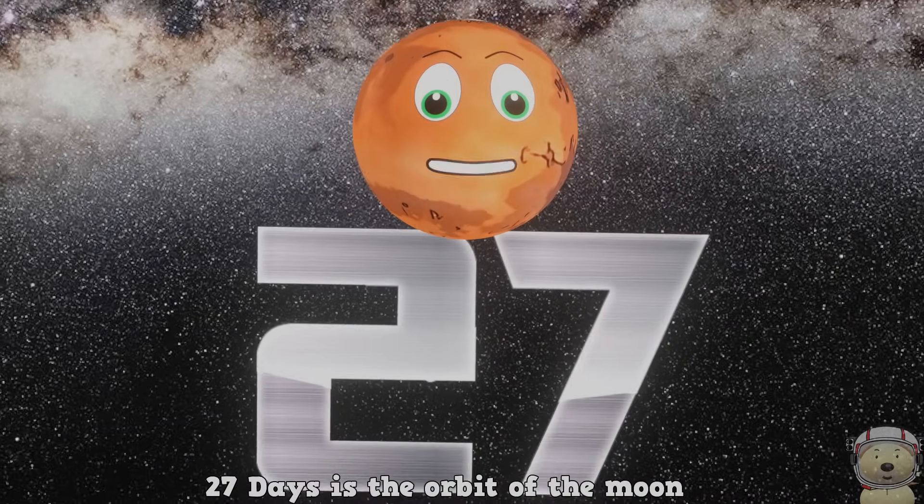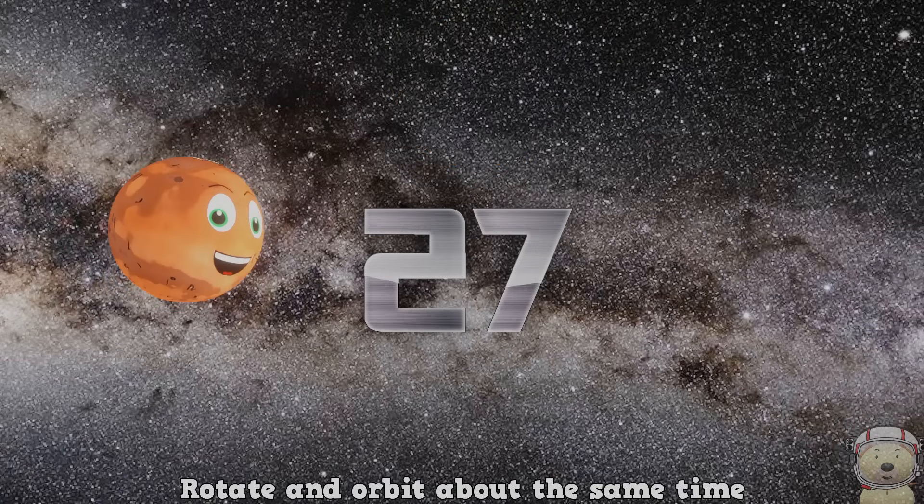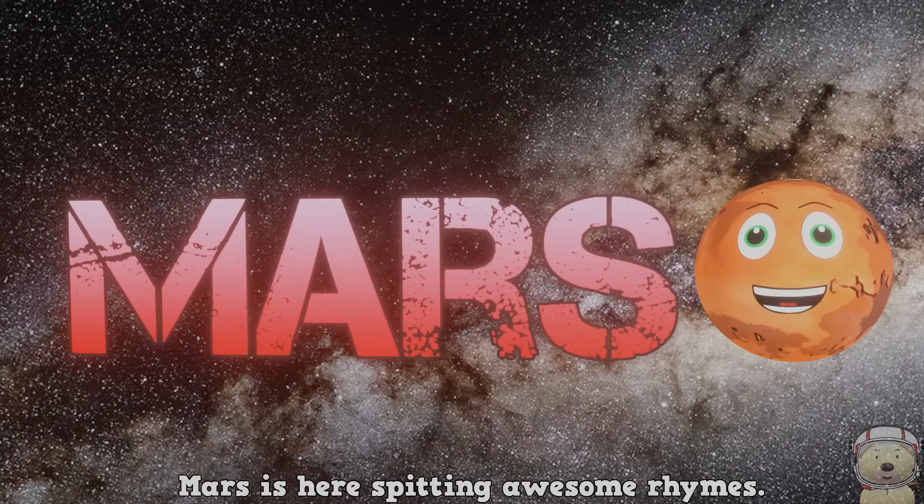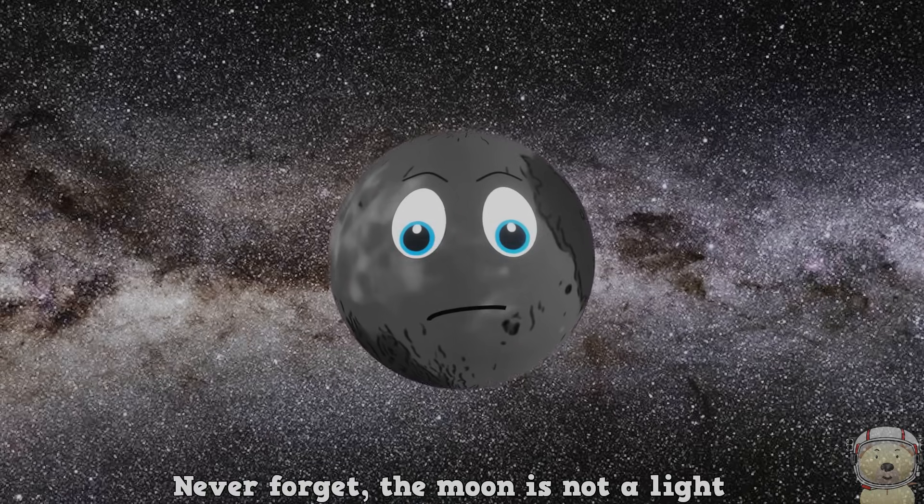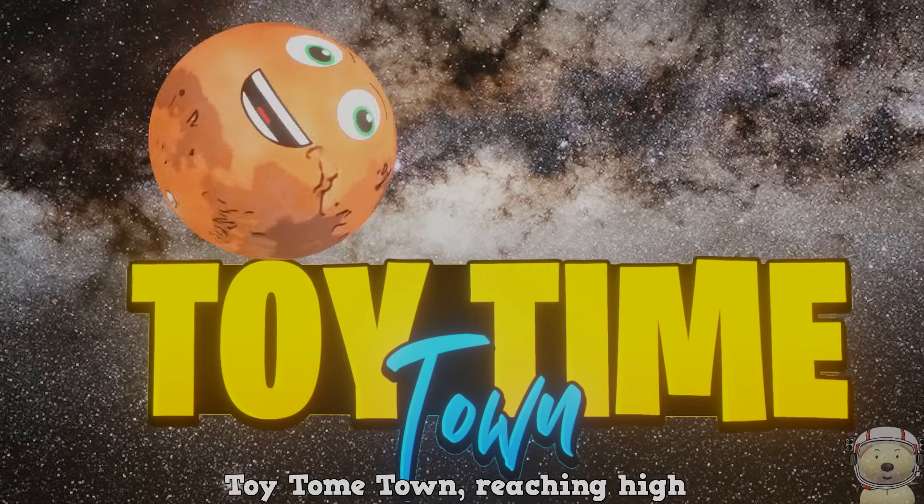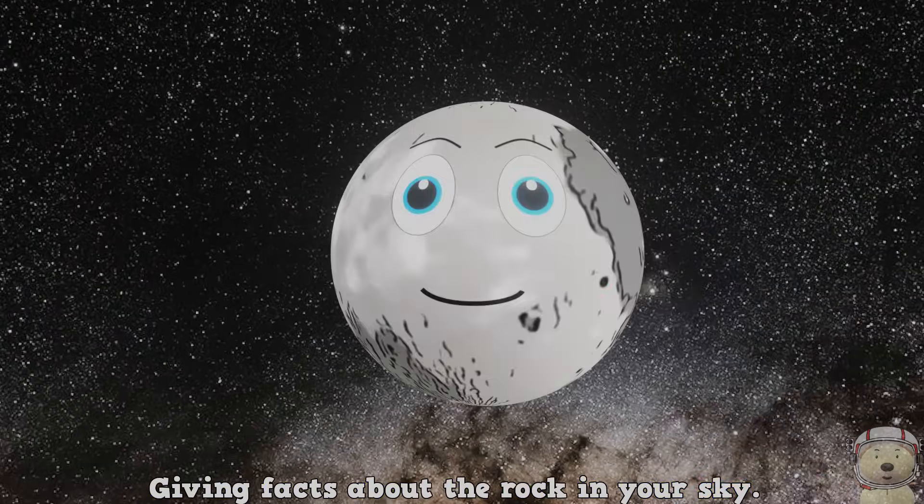27 days is the orbit of the moon. Not one day, because that is too soon. Rotate and orbit about the same time. Mars is here spitting awesome rhymes. Never forget the moon is not a light. Needs the sun to make it shine bright. Toy time time. Reaching high. Giving facts about the rock in your sky.